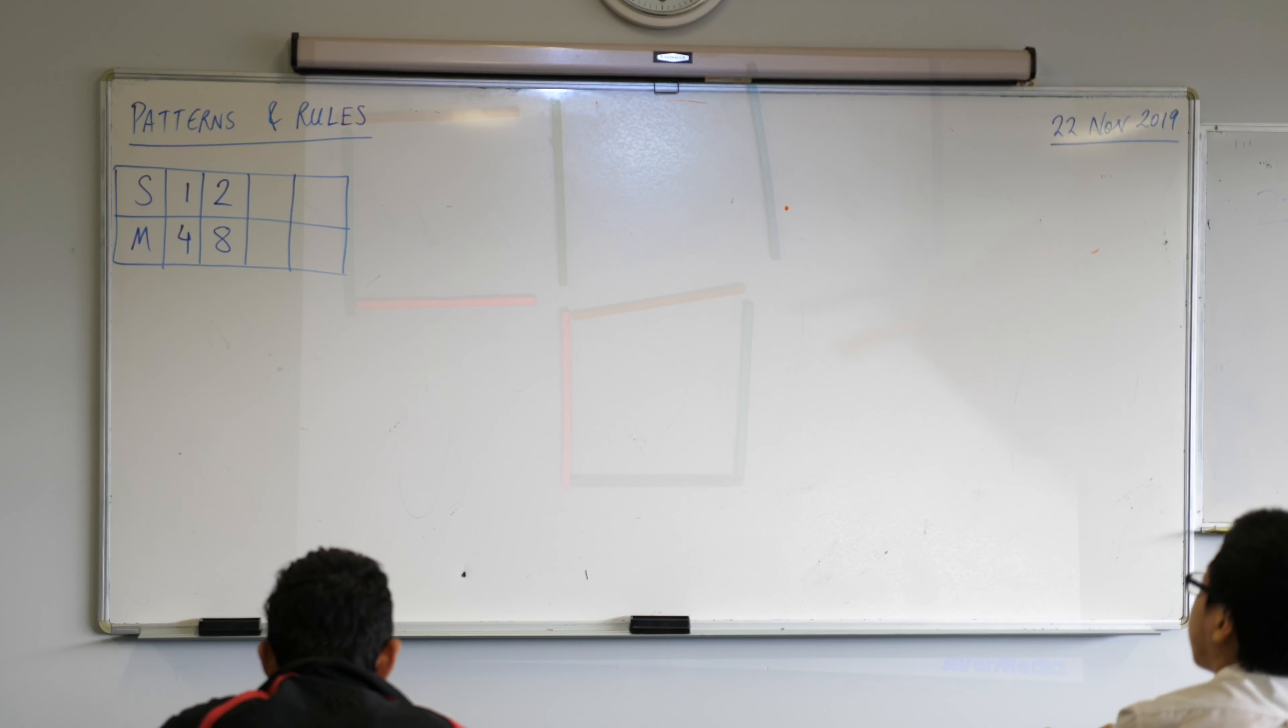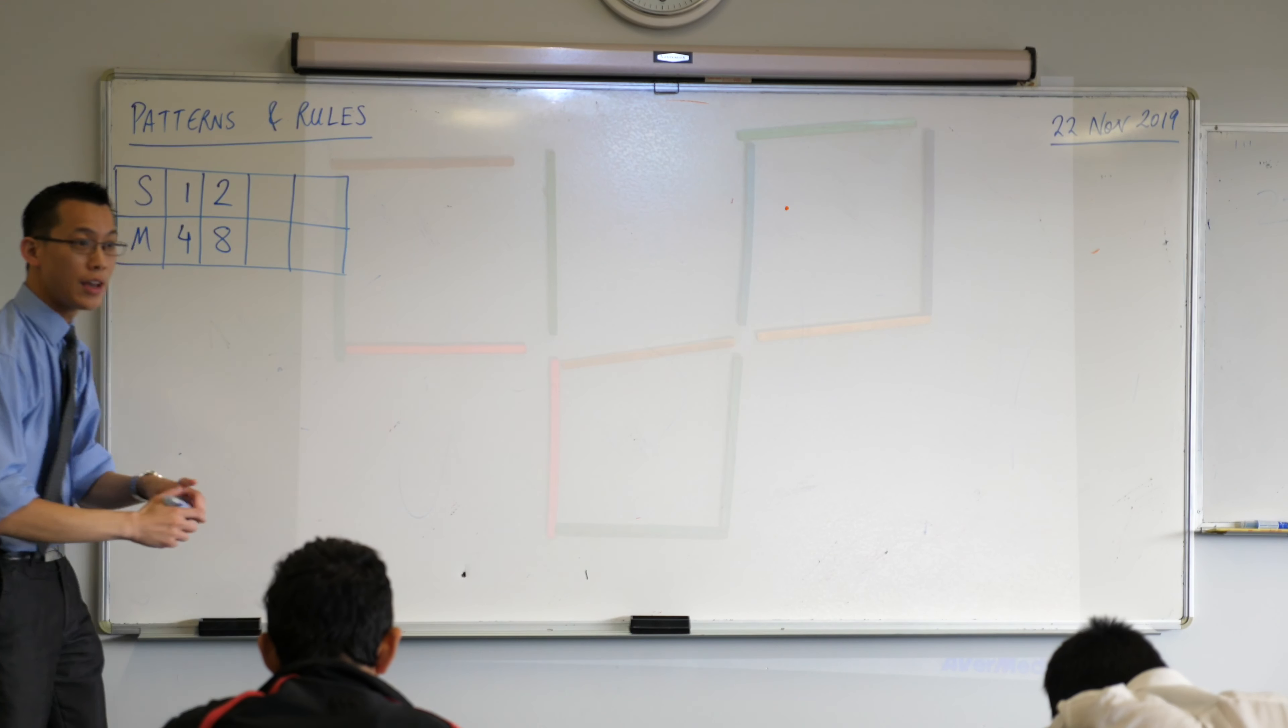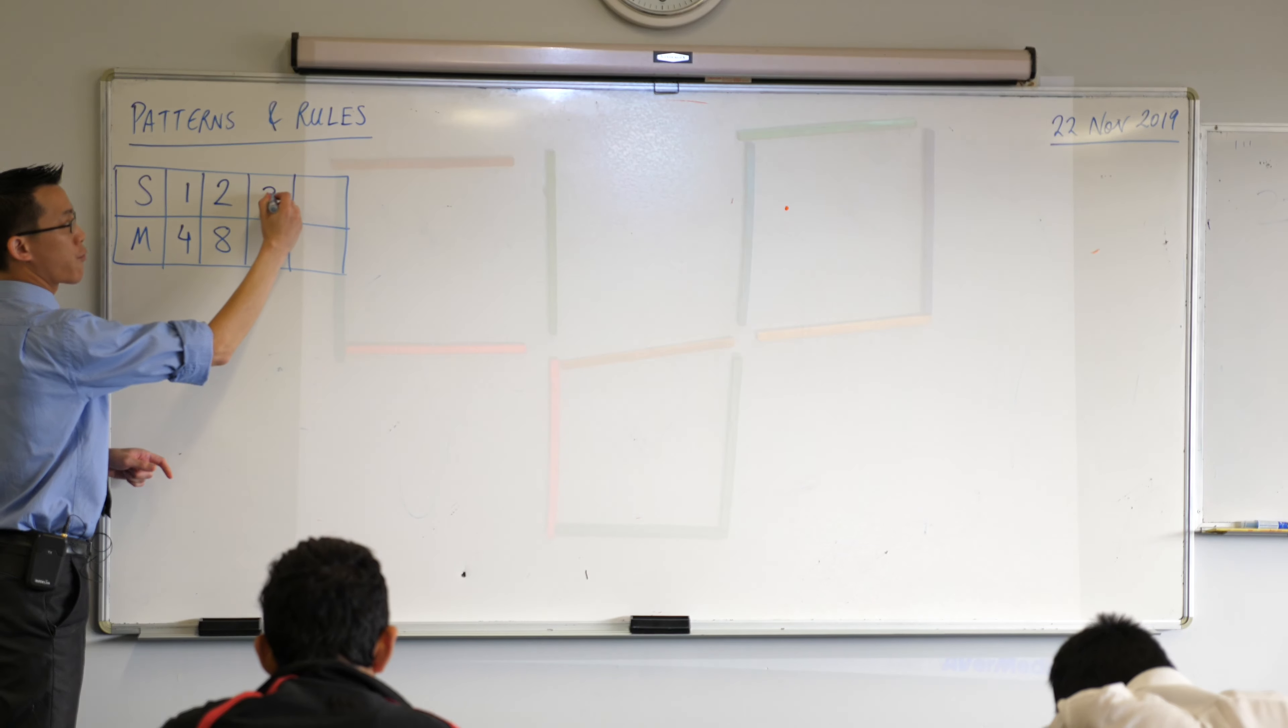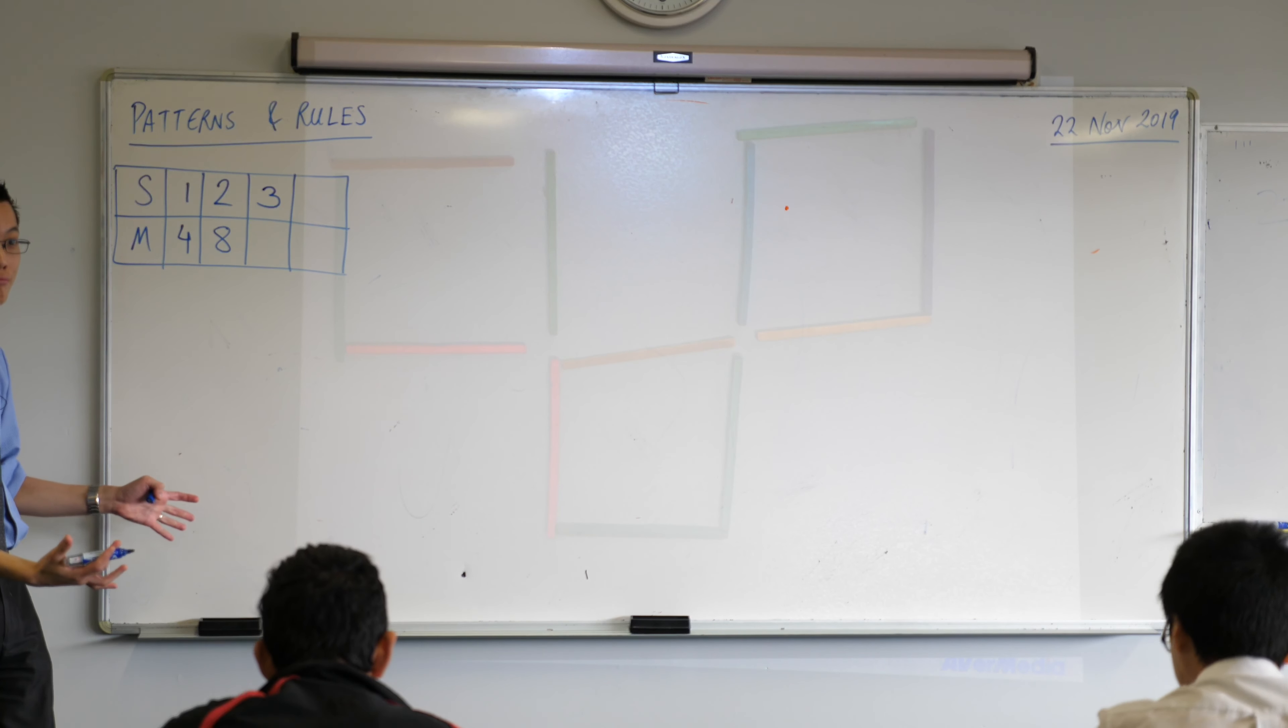Here we go. So this is the final one I'm going to show you in the pattern. Can you see the whole thing? Fantastic. So this is shape number three, and how many matchsticks have I got in total? Twelve. Twelve. Excellent.